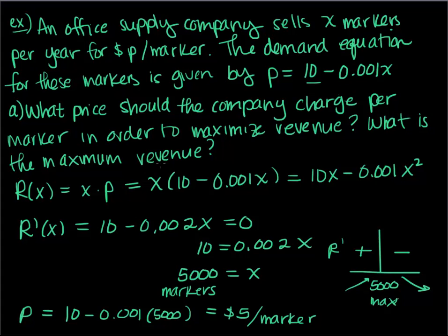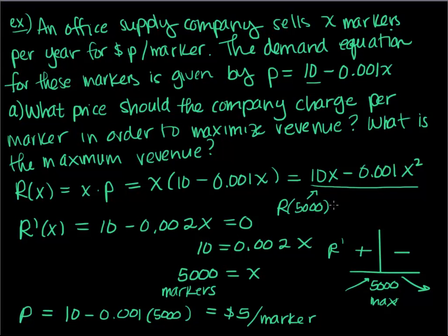What is the maximum revenue? I take R(5,000) by plugging 5,000 into the revenue function 10x minus 0.001x squared. Our maximum revenue is $25,000.